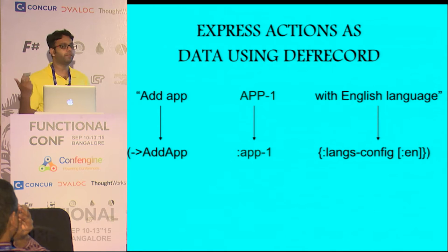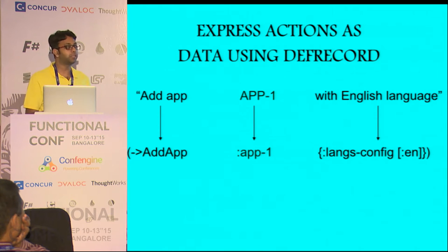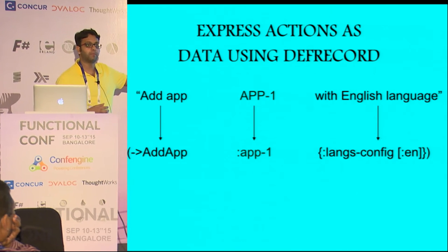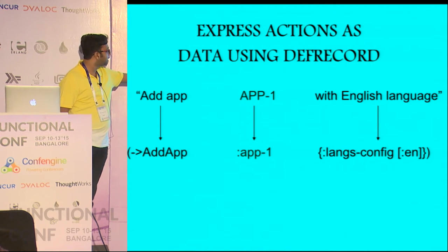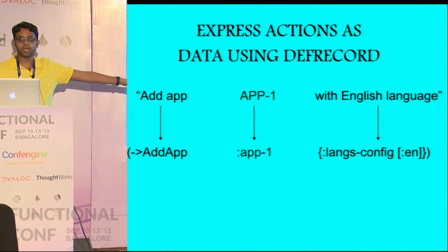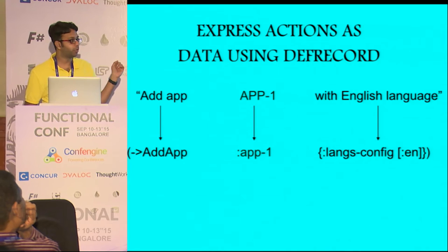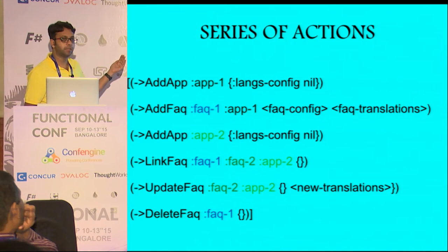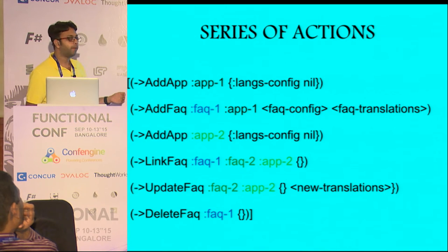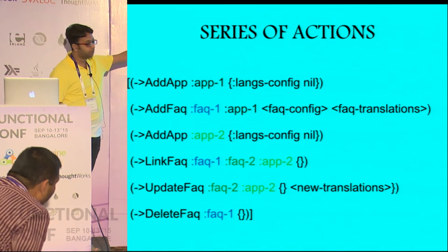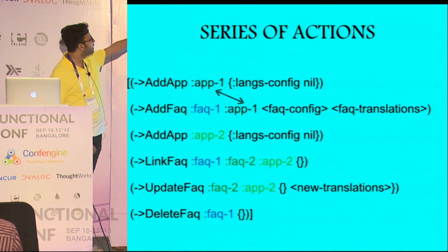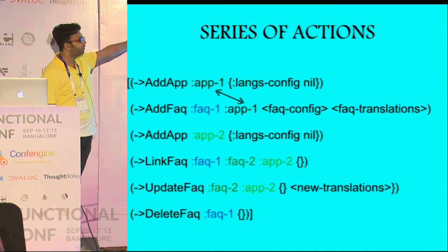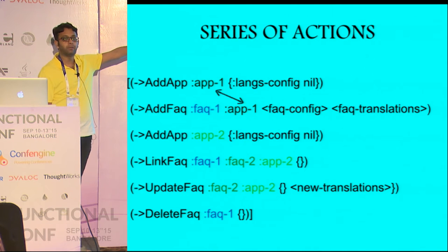We're going to use something called def record. It's basically like a class but without inherently having functionality built into it — just think of it as a hash map. The constructor takes those arguments. So I'm saying there is an add-app which will have app 1 and that's the hash map configuration. Here is a similar set of test cases but in terms of data. I'm adding an app, then adding one FAQ, referring to the name. App 1 is being referred to later — when you add that app, call it app 1, and when you add an FAQ, call it FAQ 1, but add it to app 1, and so on.